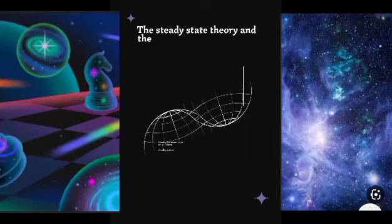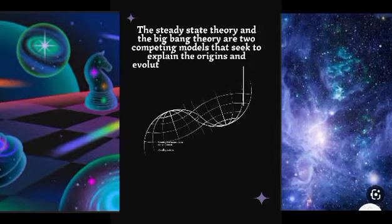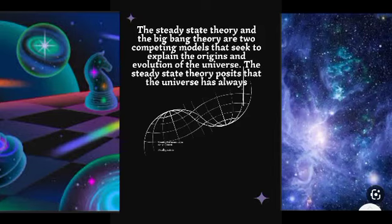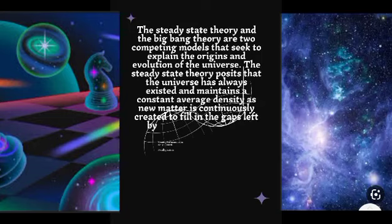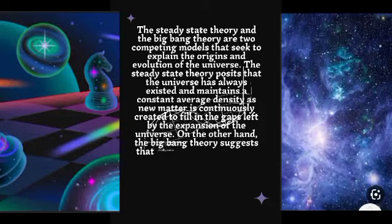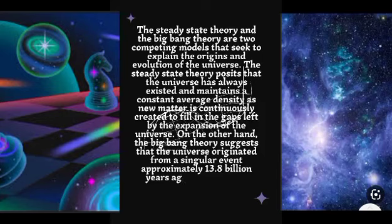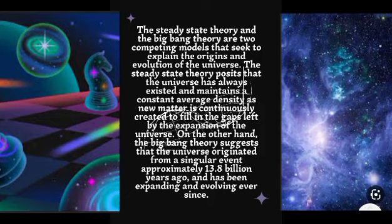The Steady State Theory and the Big Bang Theory are two competing models that seek to explain the origins and evolution of the universe. The Steady State Theory posits that the universe has always existed and maintains a constant average density as new matter is continuously created to fill in the gaps. On the other hand, the Big Bang Theory suggests that the universe originated from a singular event approximately 13.8 billion years ago and has been expanding and evolving ever since.